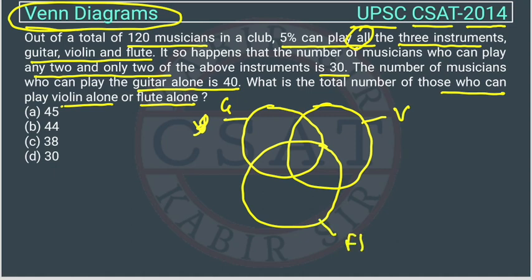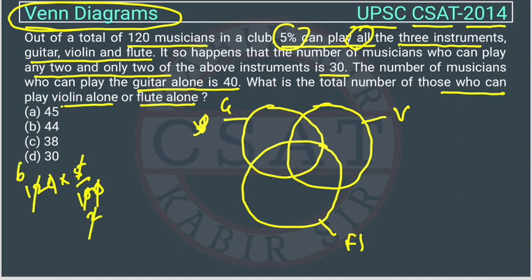Total is given as 120. 5% can play all three instruments, so we calculate 5% of 120. The zeros cancel, and 5 divided by 2 gives us 6 — so the area representing musicians in all three circles is 6.